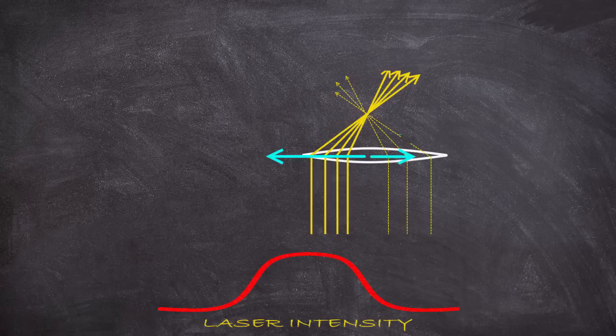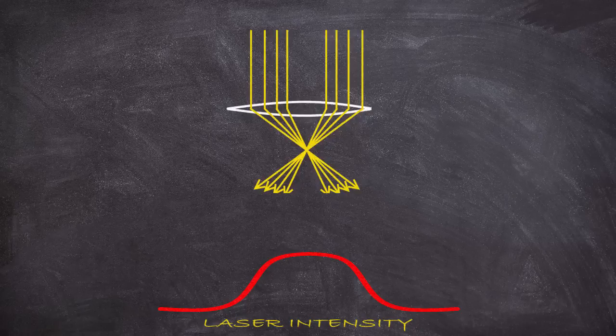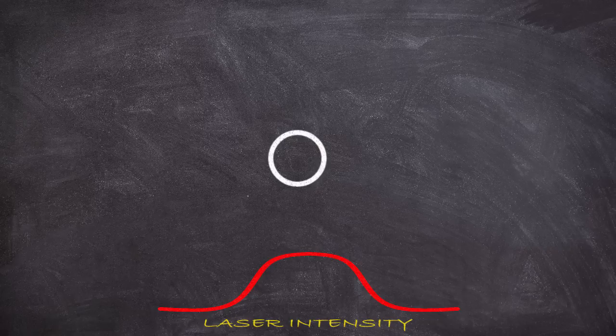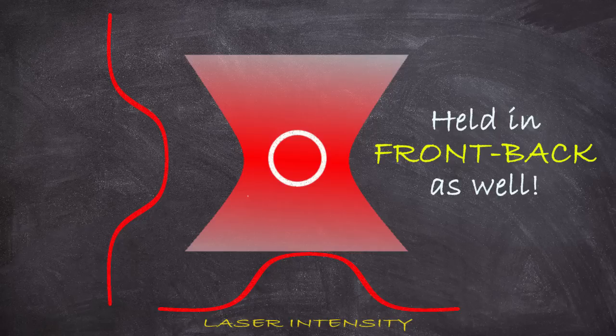Of course, this only works to push the lens left or right. There's nothing stopping it from moving front to back. However, instead of a lens, if we imagine just a glass sphere, and we imagine a laser beam that is actually focused at a spot such that its intensity varies in the front-back direction, we see we can use this trick again to hold it in the front-back direction.